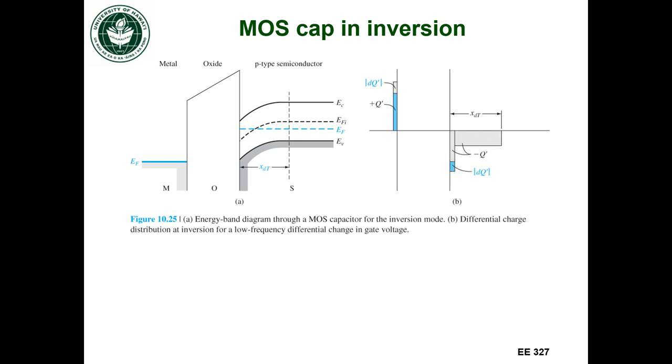I'm not changing the amount of charge in the space charge region anymore because that has reached a maximum width. So I'm changing the charge on the inversion layer. And so now I don't have to consider the capacitance of the space charge region anymore. I'm back to the case that I had in accumulation. So in inversion my capacitance is now back to the oxide capacitance.